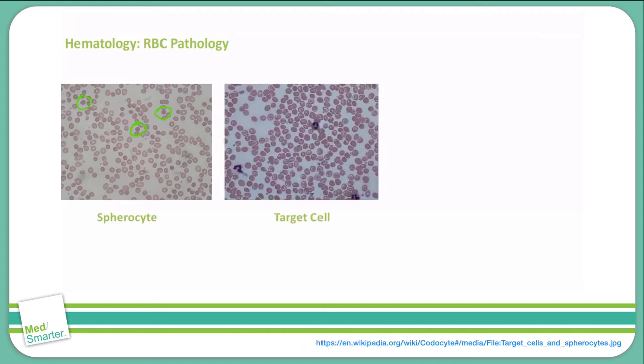Next, we have target cells, and what you're seeing here is actually an additional surface area like here, and it looks like you have a target. This is found often in alpha and beta thalassemias, as well as hemoglobin C. You see it in iron deficiency anemia, and it also comes in after a splenectomy, because the spleen does a lot of the breaking down of the old red blood cells.